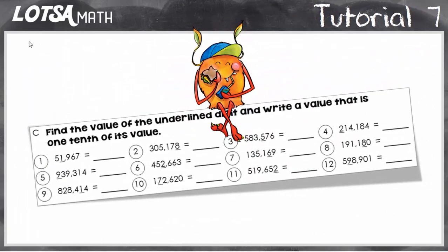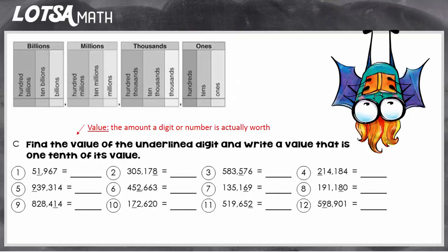Here's how to solve problems when they want you to find the value of the underlined digit and write a value that's one-tenth of its value. So let's look at the directions a little more closely. It says find the value, and the value is just the amount the digit's actually worth, or the number's actually worth.